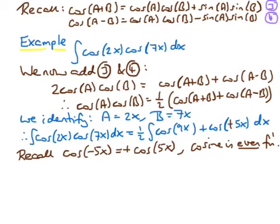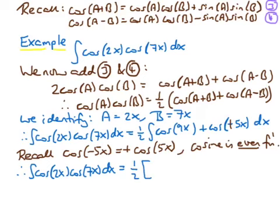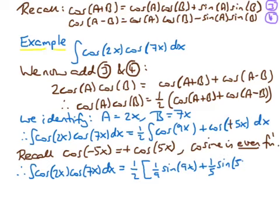Before performing the integrals, note that cosine(−5x) equals cosine(5x) because cosine is an even function, and sine(−5x) equals minus sine(5x) because sine is an odd function. It's worth making these substitutions to reduce the number of minus signs. So replacing cosine(−5x) with cosine(5x), we find: the integral of cosine(2x)cosine(7x) dx equals one half times [one ninth sine(9x) plus one fifth sine(5x)], plus a constant of integration.